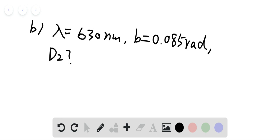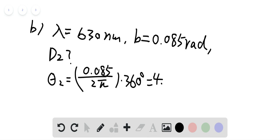Trying to figure out d2, and let's convert radians to degrees first. So theta 2 is equal to 0.085 divided by 2 pi times 360 degrees. That will give us 4.8 degrees, actually let's say 4.87 degrees.